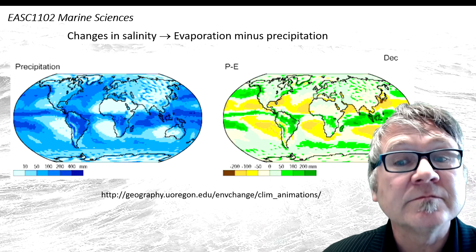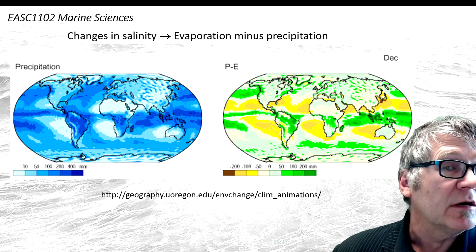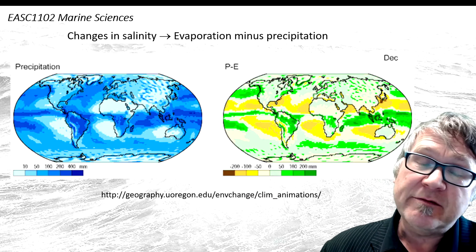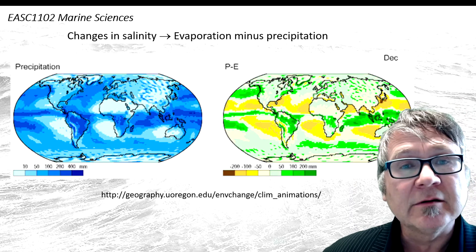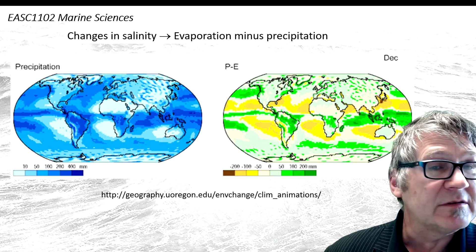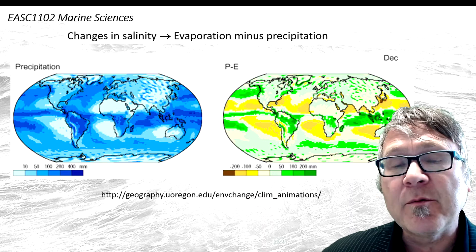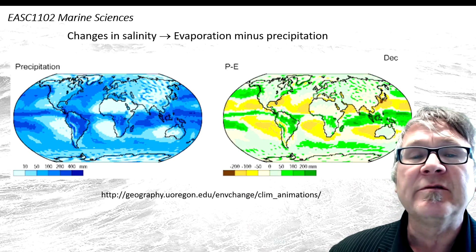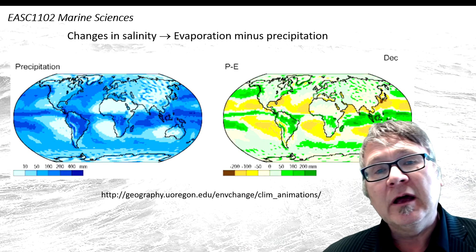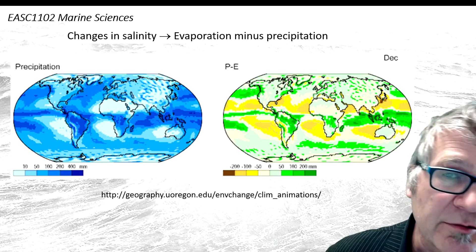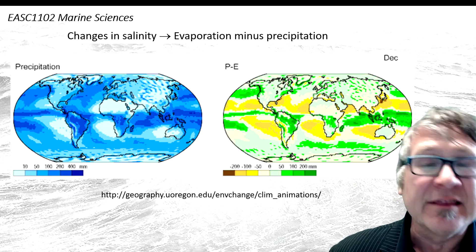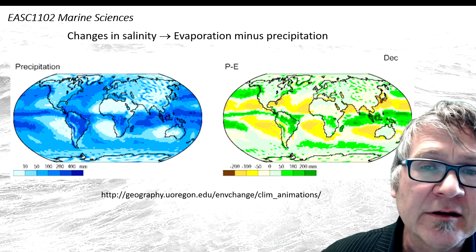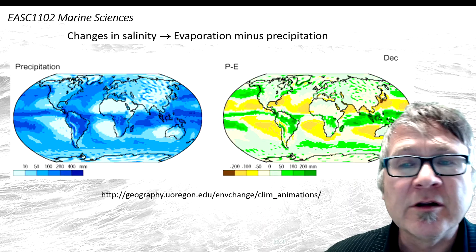As I said before, evaporation and precipitation are processes that happen at the same time. For example, if you have a glass full of water and you expose it to very strong evaporation, the water level will drop in your glass. But if you have at the same time a cloud coming past and creating rain at the same rate as the evaporation operates, the level in your glass of water will not change.